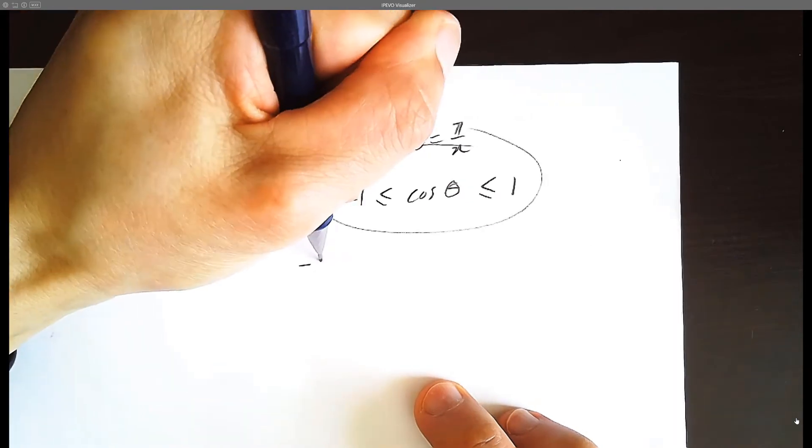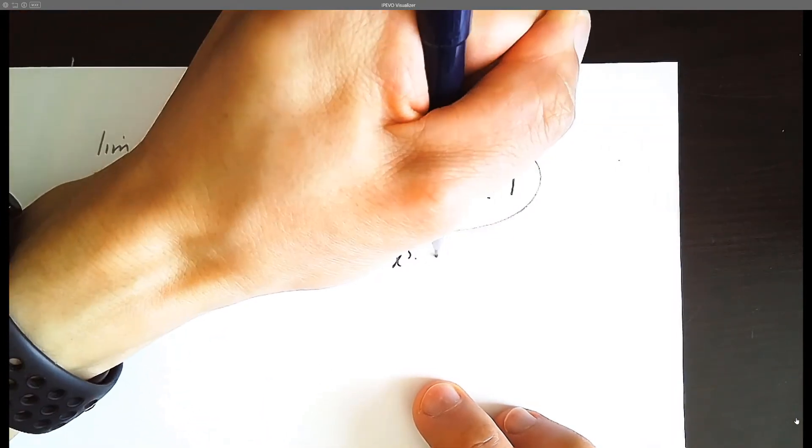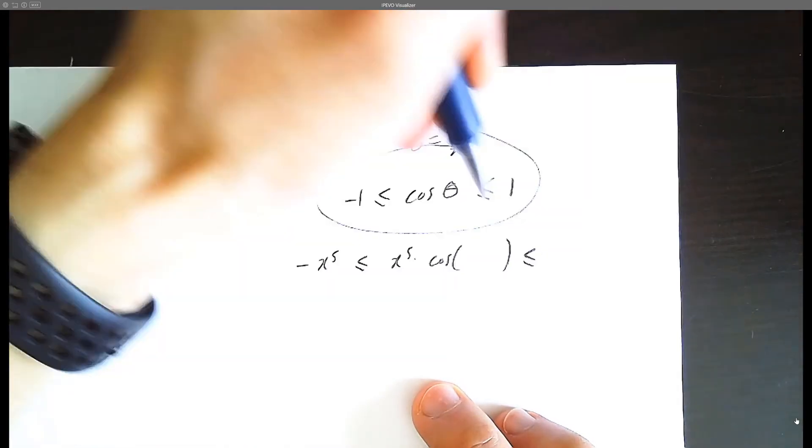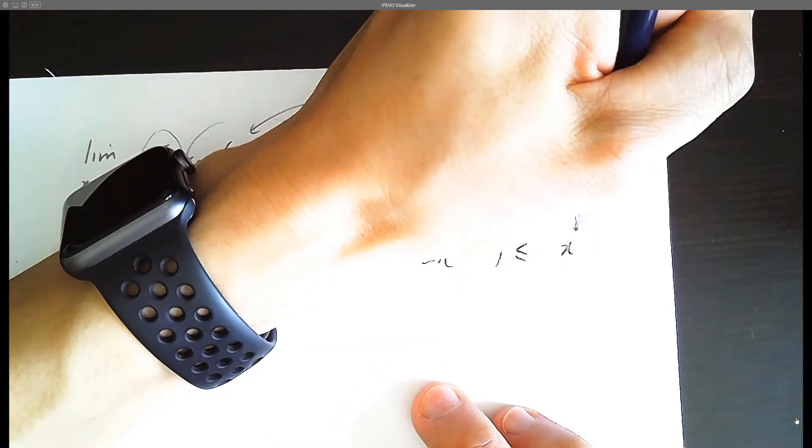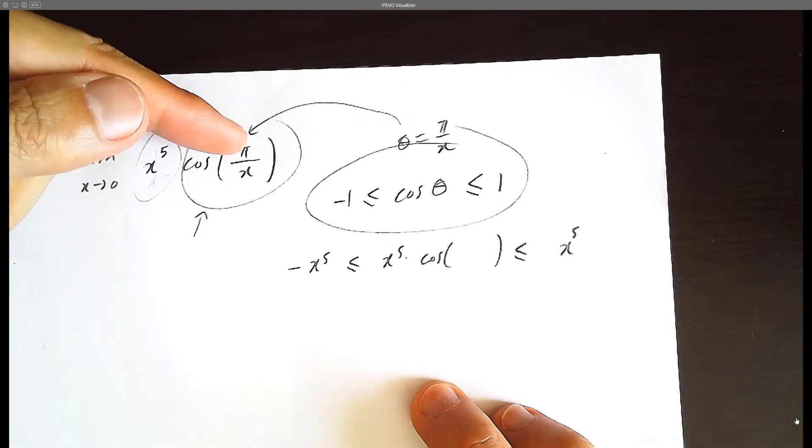So we have negative x to the 5 less than or equal to x to the 5 cosine of that angle, less than or equal to x to the 5. And that angle happens to be pi over x.